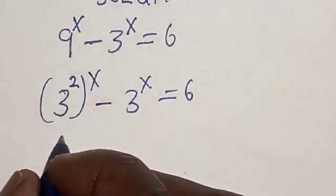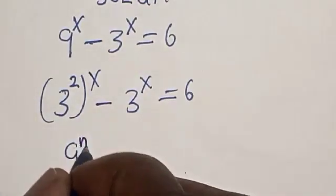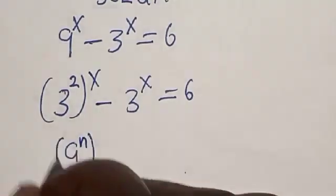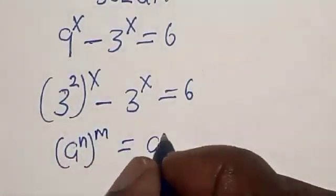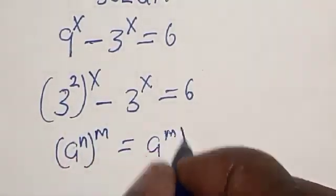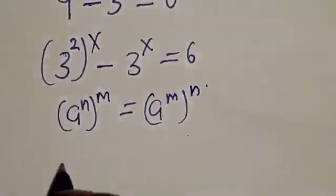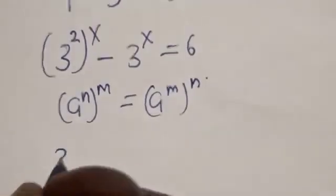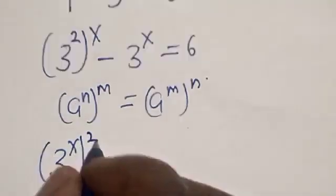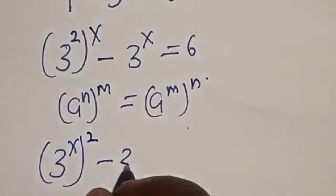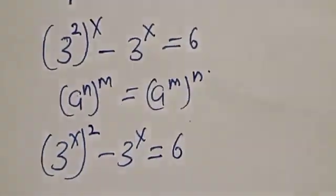Note this identity: a raised to power n, raised to power m, is equal to a raised to power n times m. Now, 3 raised to power 2x minus 3 raised to power x is equal to 6.